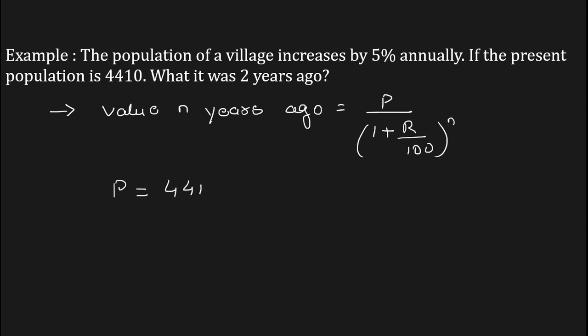P is 4410, and R is the given appreciating rate per annum which equals 5%. Here the value of R equals 5, and n equals the given number of years, that is equal to 2.